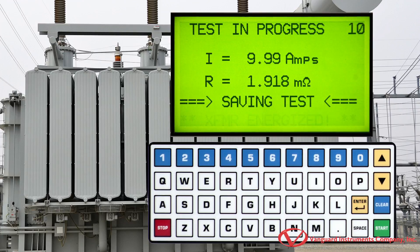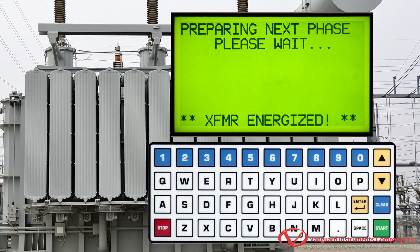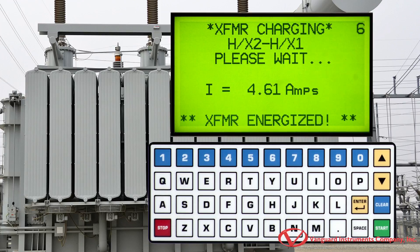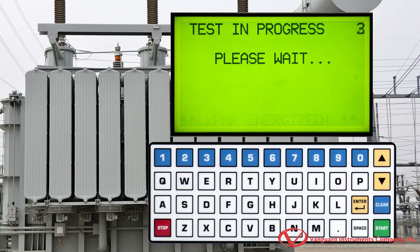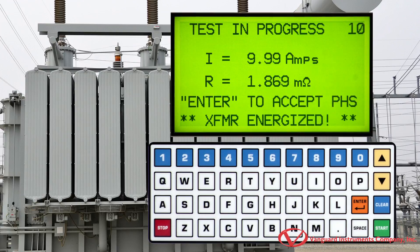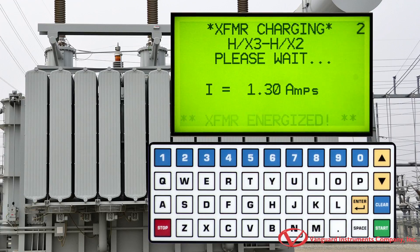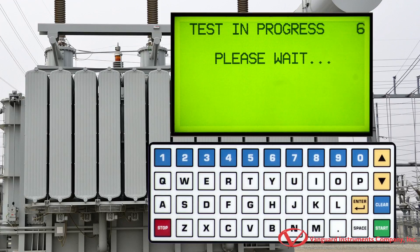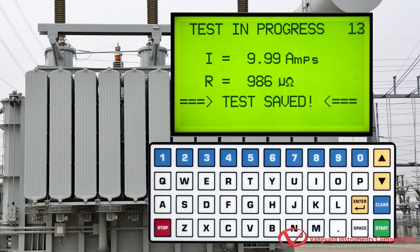Press the enter key to save the readings for the current phase. The TRM will continue to test the next phase and display the test results once the readings have stabilized. Press the enter key to save the readings for this phase. The TRM will continue to test the last phase and display the results when stabilized. Press the enter key to save the readings.